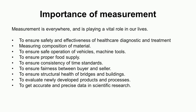In the manufacturing industry, we measure the composition of material — for example, carbon percentage in steel and other alloying element composition — so that if measurement is proper, we can build good products. To ensure safe operation of vehicles and machine tools, we measure parameters like speed, feed rate of various slides, and vibration level to check whether they are under safe running condition.